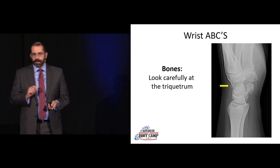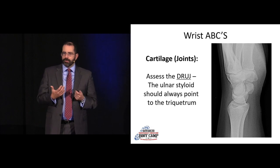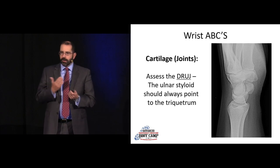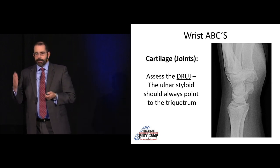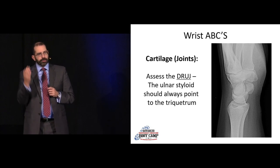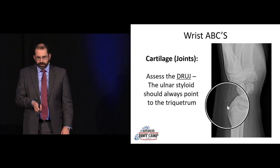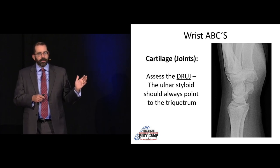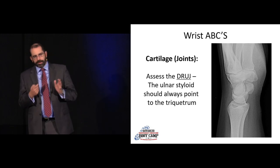The triquetrum is one of the important things to look at on the lateral. For the DRUJ on the lateral, they should be nicely overlapped. With a DRUJ disruption, the ulna is often posteriorly displaced. To distinguish a true disruption from an oblique film, look at the ulnar styloid — it should point up toward the triquetrum. If it's pointing up off into space, that's a true DRUJ disruption. If it still points toward the triquetrum, it's probably just technique.